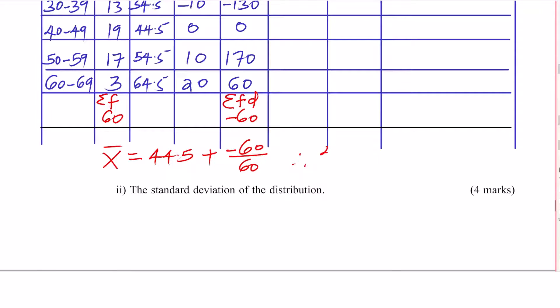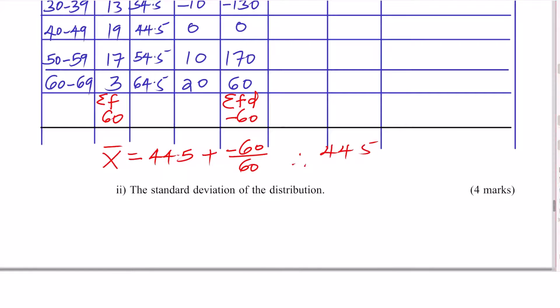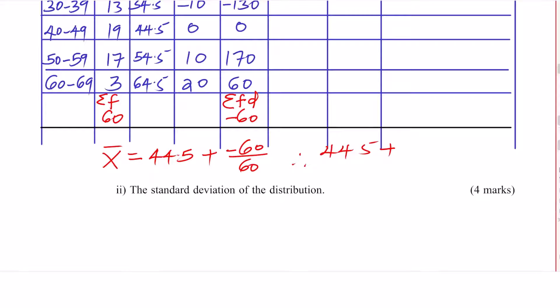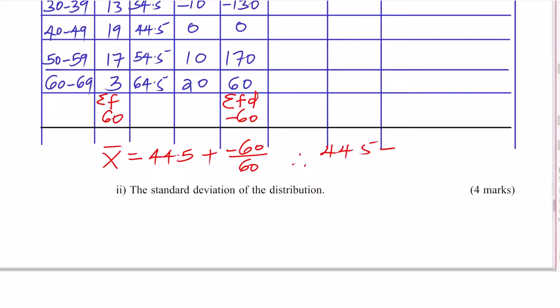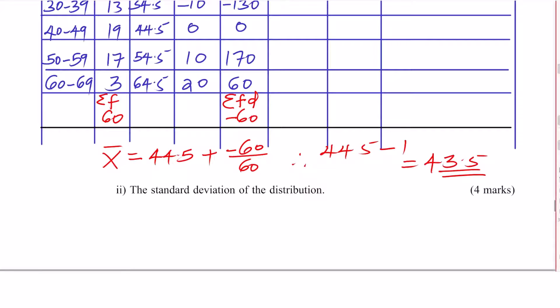Therefore the actual mean is given by the working mean 44.5, plus the summation of FD which is negative 60, divided by the summation of F which is 60. This gives 44.5 plus negative 1, which gives 43.5. That is how you work out the mean.